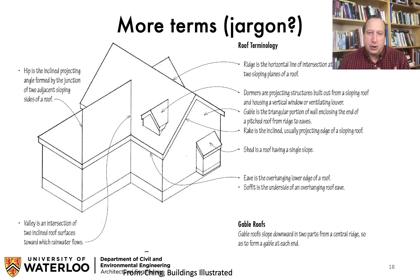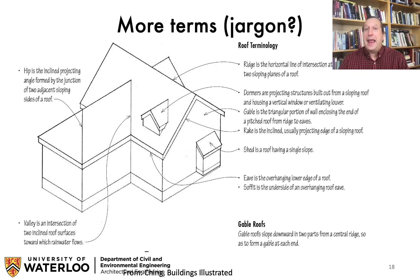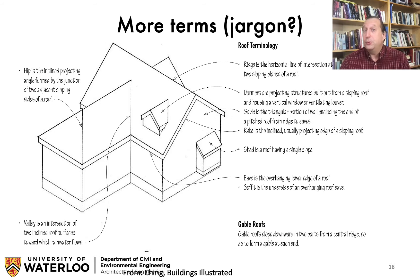Let's look at a few more terms applied to roofs. You need to get comfortable with the parts of a roof: what's the difference between an eave and a fascia, or what is a soffit? Most people know what a ridge and a valley are, but do you know what a rake is? Those are terms you should get to know, and they are presented here on one slide that you can study.